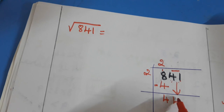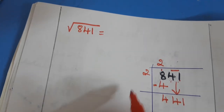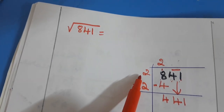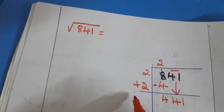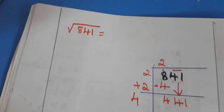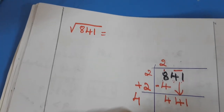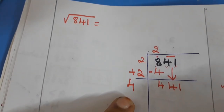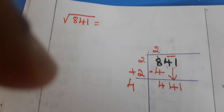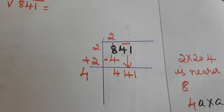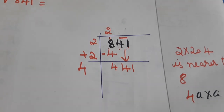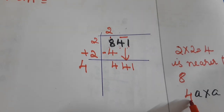What we have written — the same number we have to repeat here. Two plus two is four. Now with this four, any guessing number multiplied with that same guessing number — after multiplying we have to get the answer close to 441.